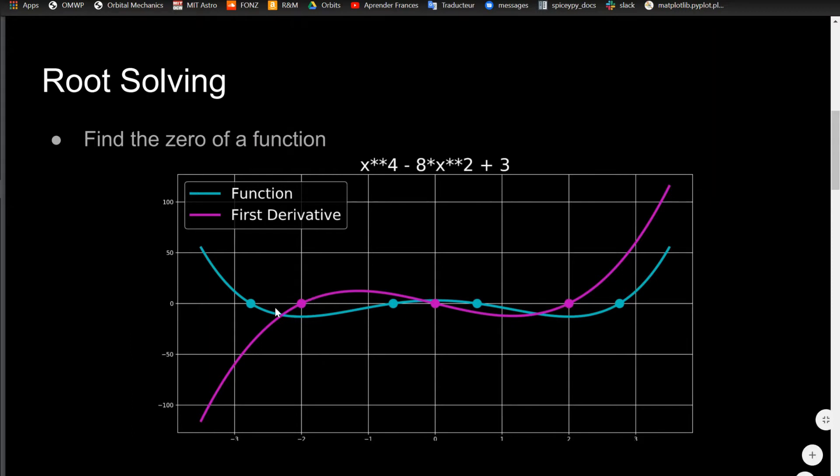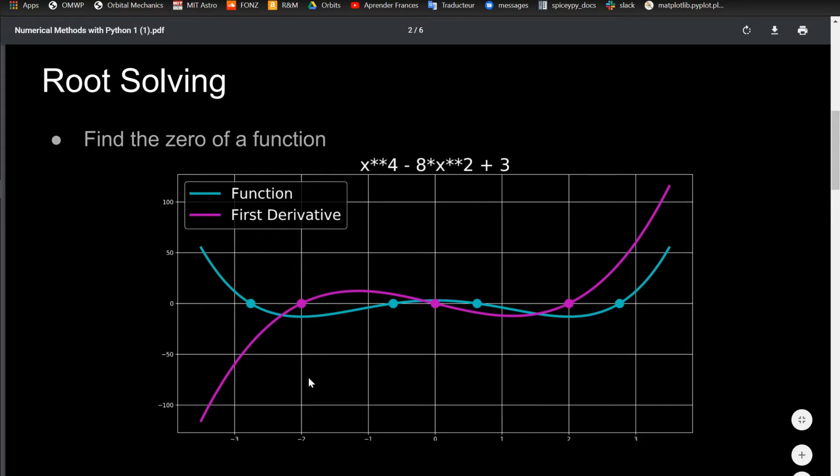You can see there's four zeros here, and with this kind of iterative scheme, it really depends on what your initial guess is. Say that you wanted to find what this zero was over here. You'd have to take an initial guess along this curve, because as soon as you get past this inflection point and over here, whatever initial guess you get is actually going to solve for this root. That's basically what it is. The problem that you're trying to solve is to find the zero of a function and do it numerically.